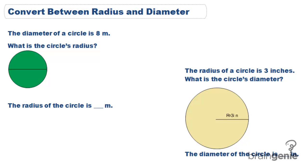Now that we know a radius is just half of the diameter and vice versa, we will be able to solve for radius if we know the diameter and solve for diameter if we know the radius. This green circle has a diameter of 8 meters and it asks us to find the circle's radius.